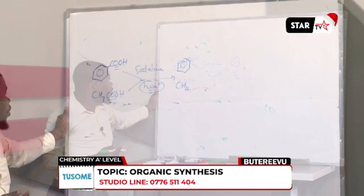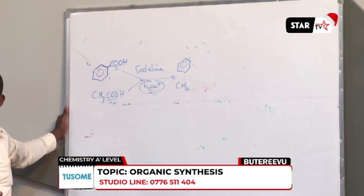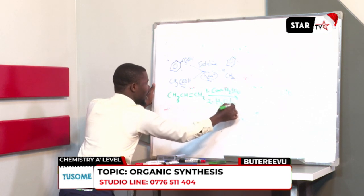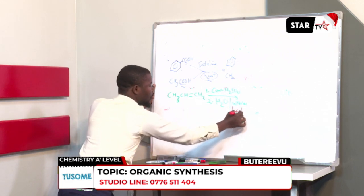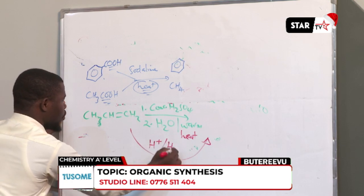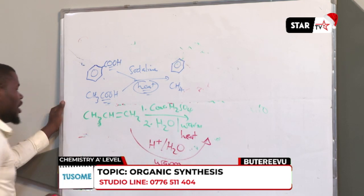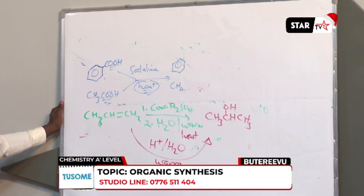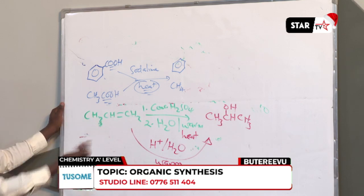The other reaction that requires heat, warm, or reflux is hydrolysis of alkenes. If you want to hydrolyze an alkene such as propene, you use concentrated sulfuric acid, then add water and warm. Heating or warming is accepted, but reflux is not accepted. The reaction results in formation of a secondary alcohol — in this case, we have converted propene to propan-2-ol.